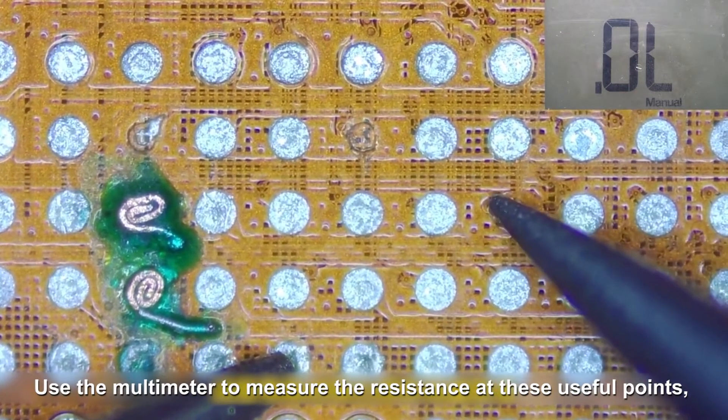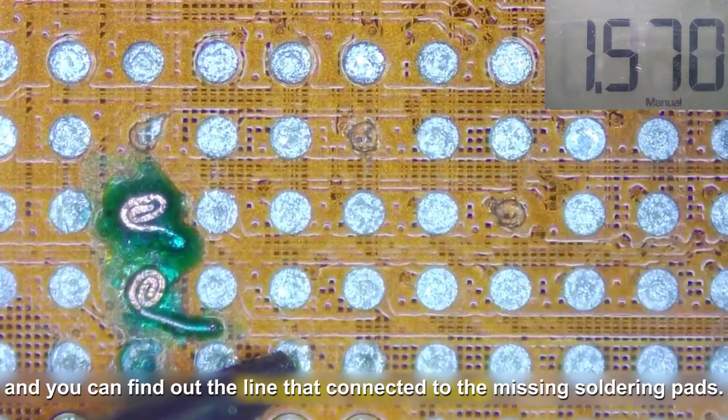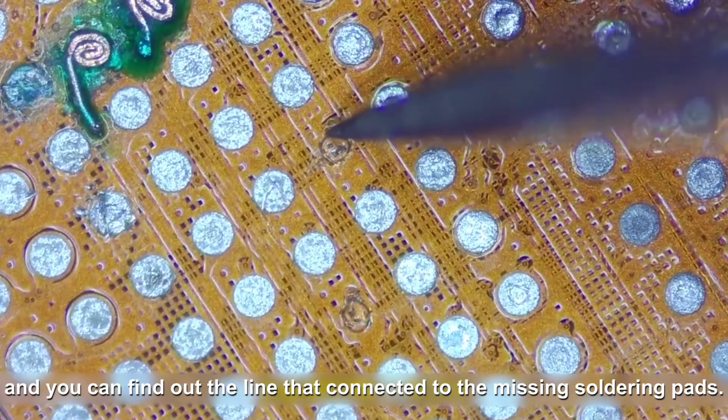Use the multimeter to measure the resistance at these useful points, and you can find out the line that connected to the missing soldering pads.